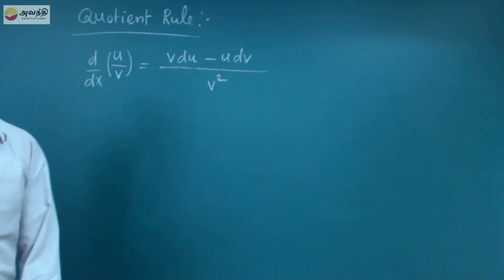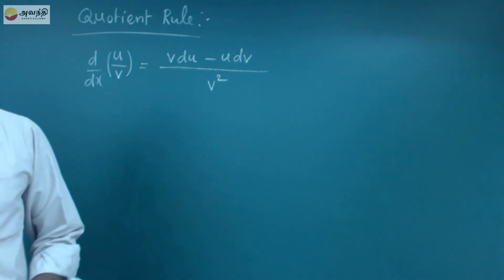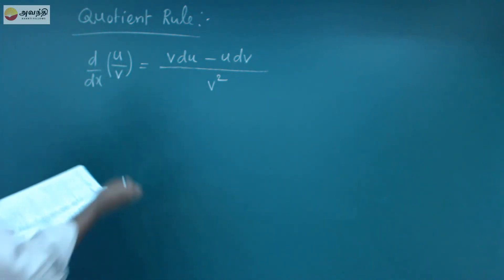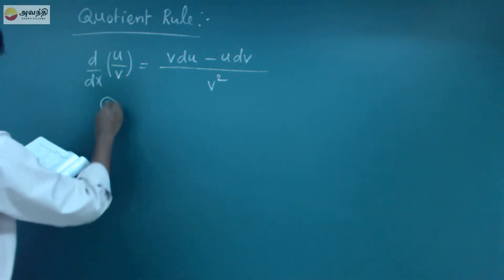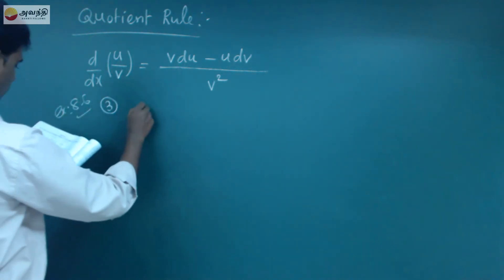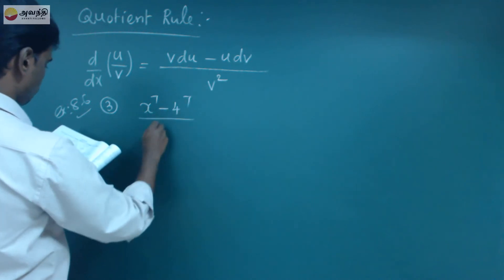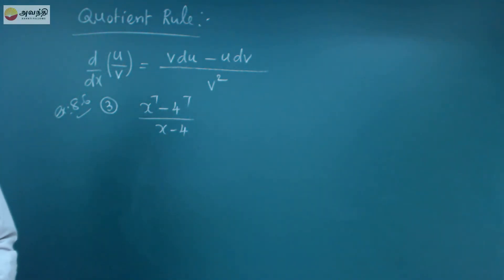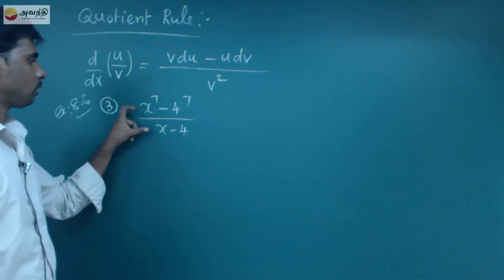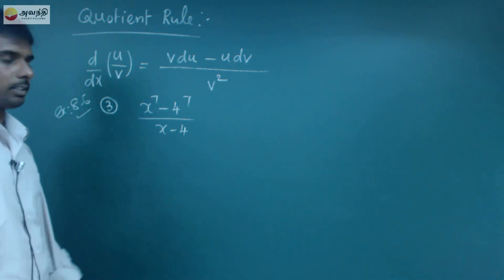We can use the quotient rule formula. In the exercise — exercise 8.6 — we have the function: x power 7 minus 4 power 7, divided by x minus 4. This is a quotient, this is a fraction. How do we differentiate this?